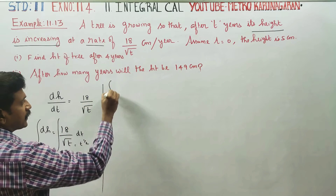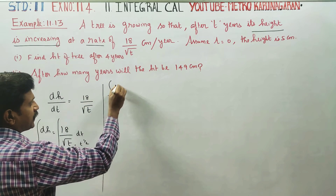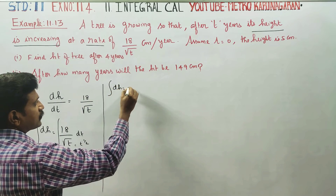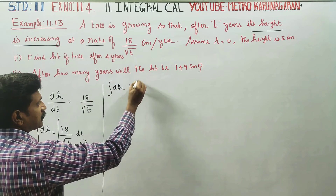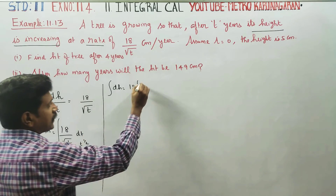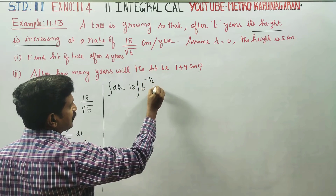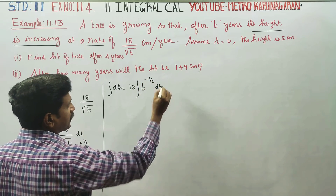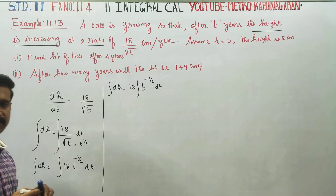Integration of dh is equal to the integration of t to the power of minus one half dt. The first step is the integration of dh.